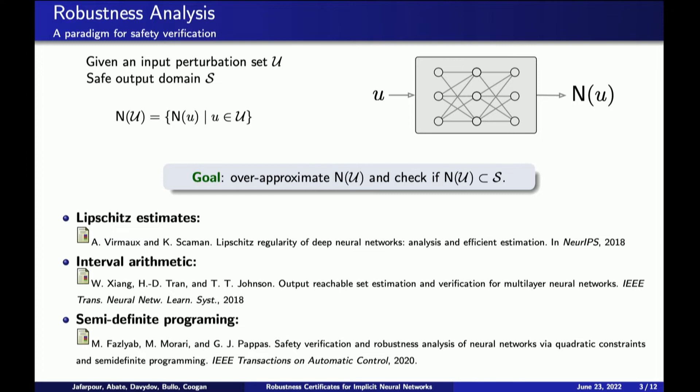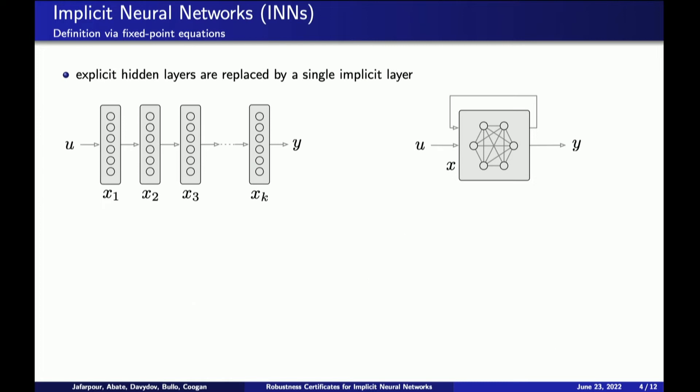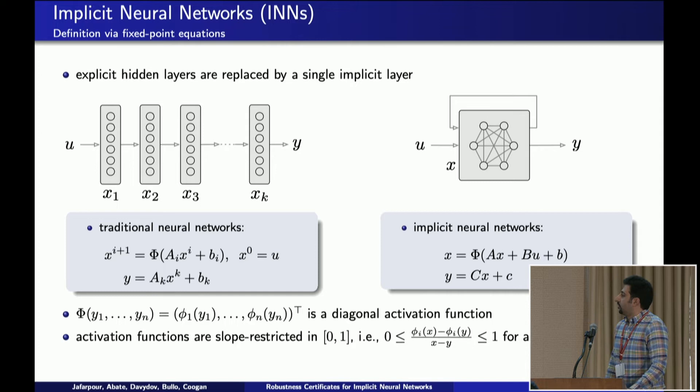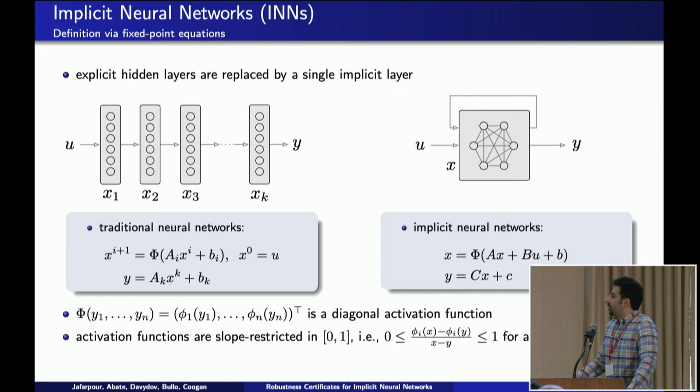Another relevant piece of literature is the notion of implicit neural nets. Implicit neural nets are a class of learning algorithms that replace explicit hidden layers in neural nets with one single implicit layer. For a feedforward neural net, the output can be obtained from input by recursively applying activation functions and weight functions. However, for implicit neural nets, the output is defined as an implicit function of the input using a fixed-point equation. Implicit neural networks can be considered as one instance of a more general context of implicit learning, where the input-output behavior is defined as an implicit function. That relation can be a dynamical system or differential equation, as in neural ODEs, or an optimization problem in frameworks like OptNet.